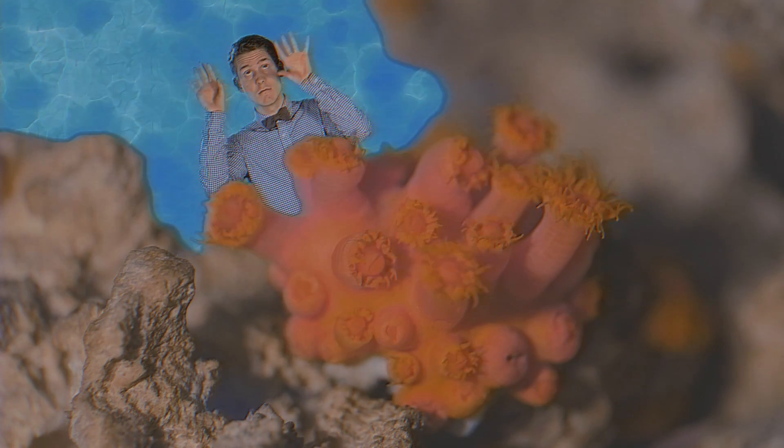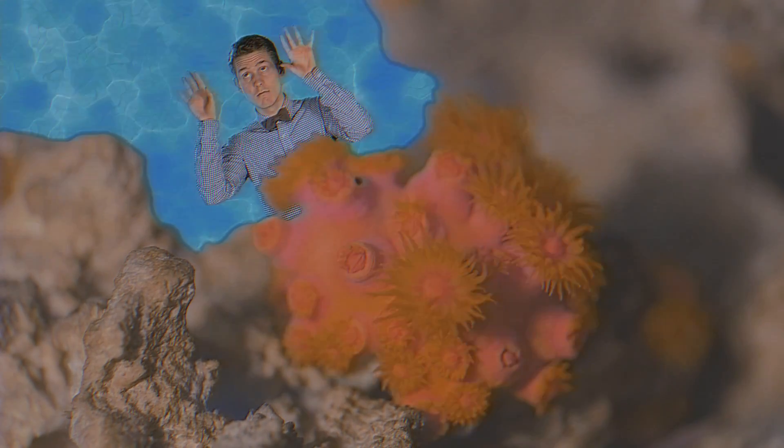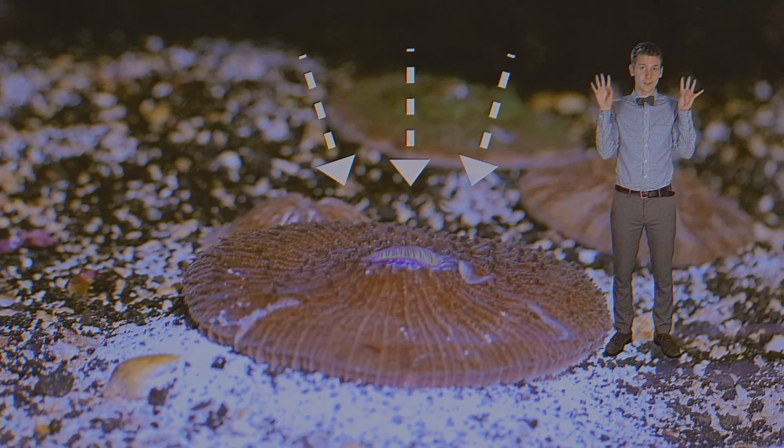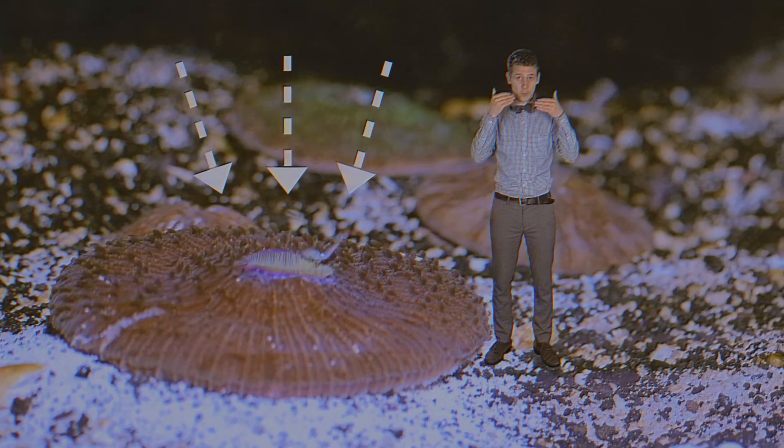So the polyp is all mouth and stomach. It just sits there on the seafloor, waving its stinging tentacles around, looking for its next meal. The polyp snares its catch with its stinging tentacles and stuffs them into its mouth hole. That prey might be a small fish, or they could eat maybe a tiny microscopic zooplankton, which are floating around in the water.